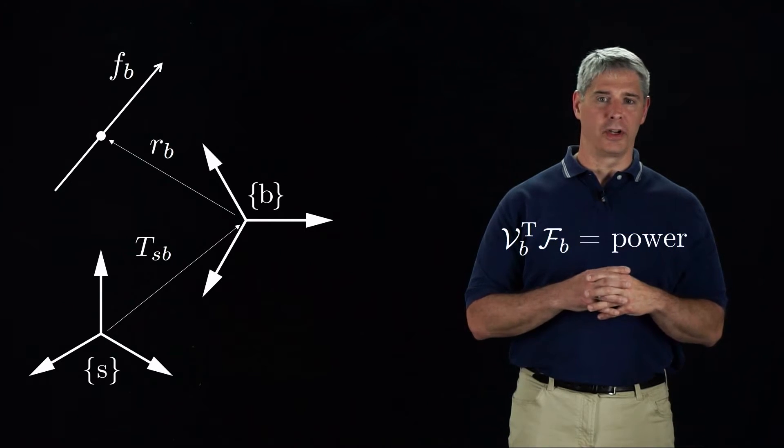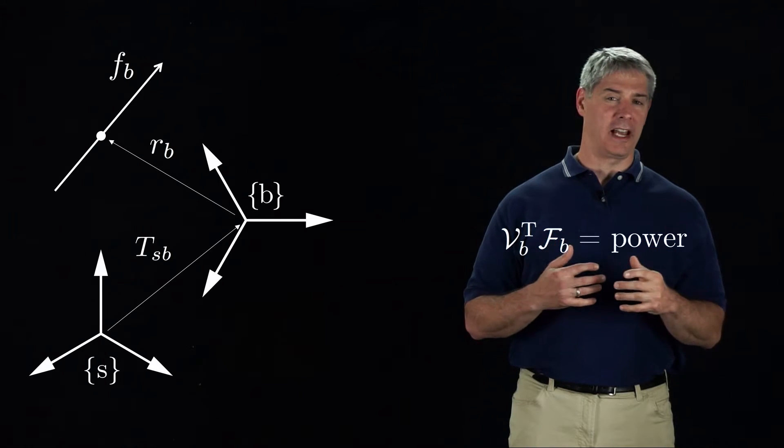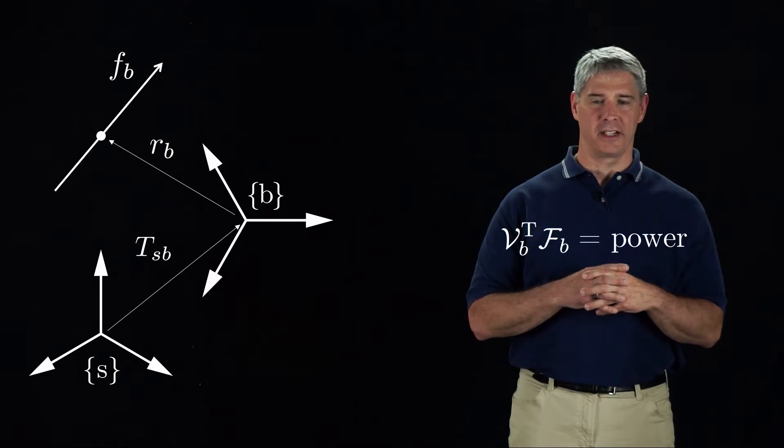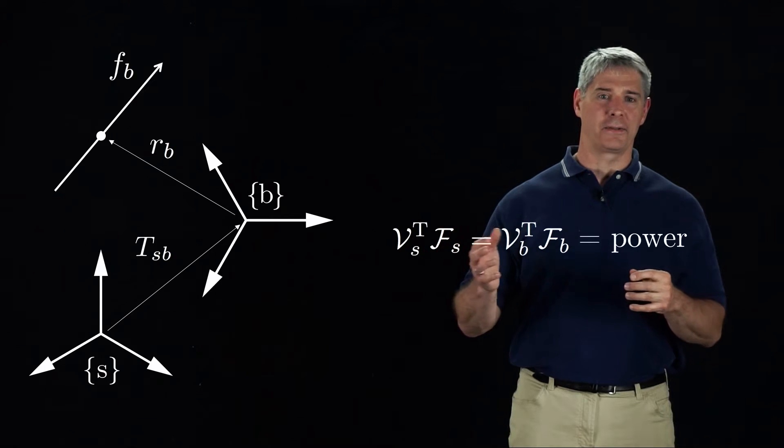Power does not depend on a coordinate frame, and therefore the power must be the same whether the wrench and twist are represented in the B frame or in the S frame.